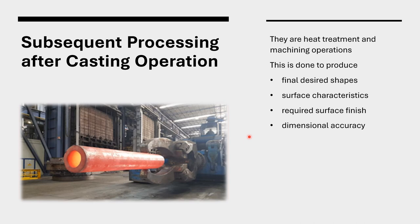Additional processes after casting are called subsequent processing — mostly heat treatment and also machining to get a really good surface. These are done to produce the final desired shape with the required surface finish and dimensional accuracy.